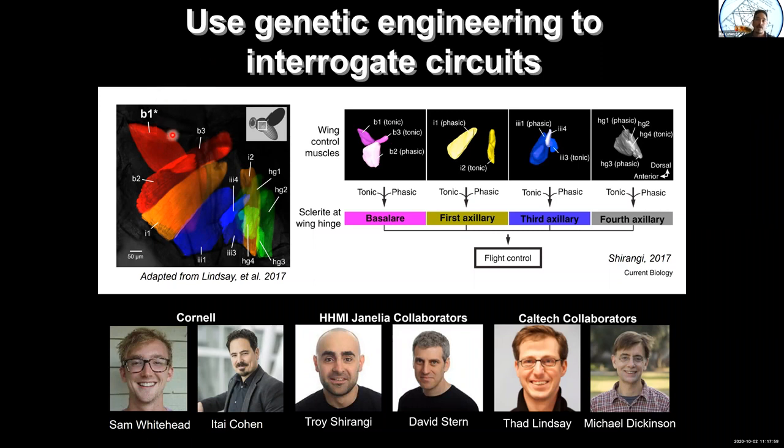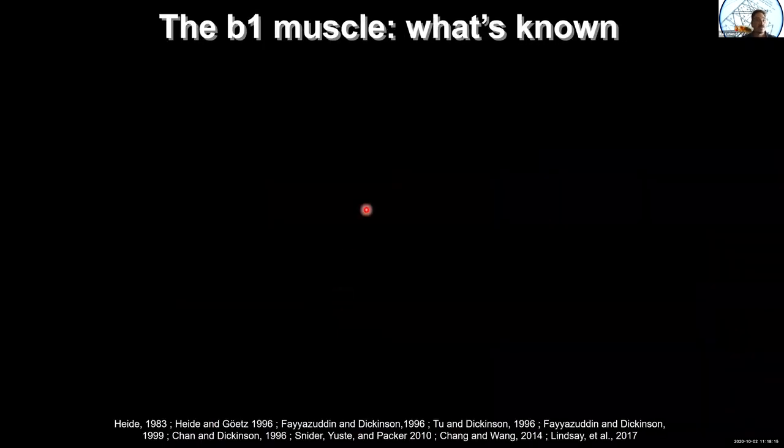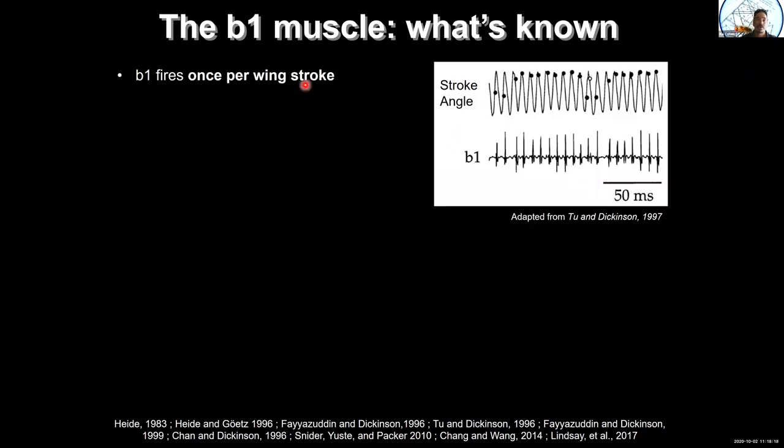Again, we were lucky enough to work with them. In order to test things out, what we wanted to do is we wanted to start futzing around with these steering muscles to see what their effects are on these perturbative maneuvers. What I'm going to tell you about is something called the B1 or basilar one muscle. It's this one right here. So the B1 muscle, what's known? Well, first of all, it fires once per wing stroke. So it's called a tonic muscle. It fires every time the wing flaps. And what happens is that when the muscle fires in coordination with the wing stroke, you get one stroke amplitude.